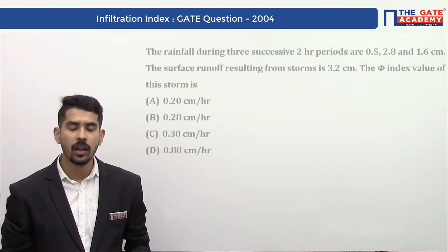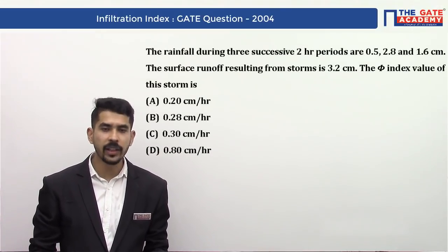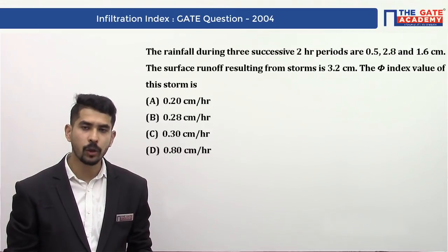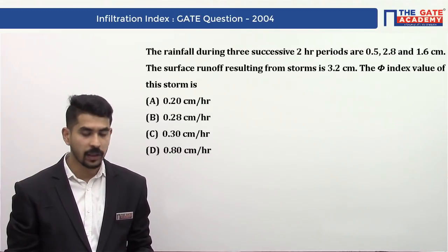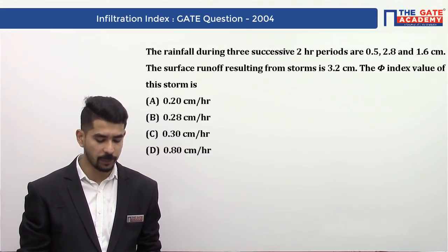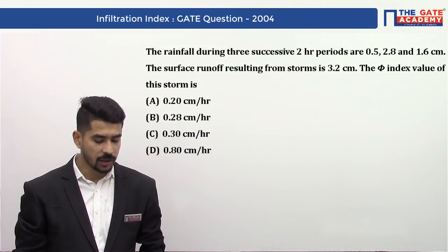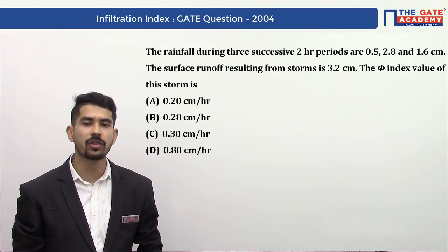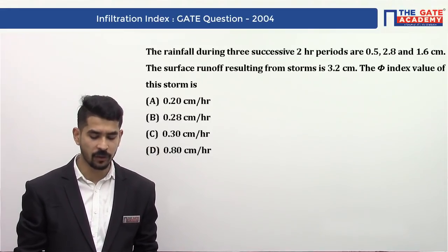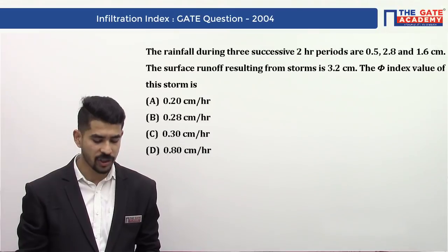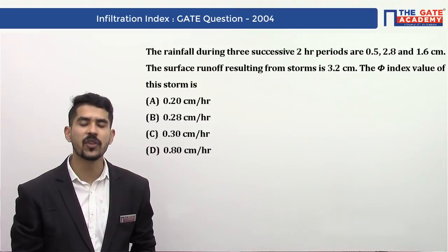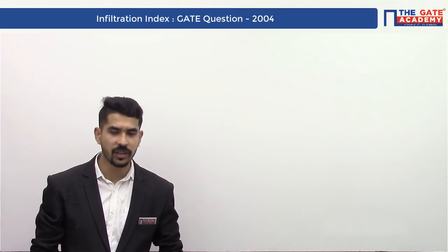This question says the rainfall during three successive two-hour periods are 0.5, 2.8, and 1.6 centimeters. The surface runoff resulting from the storm is 3.2 centimeters. The phi index value of this storm is asked, with options: (a) 0.2 cm/hr, (b) 0.28 cm/hr, (c) 0.30 cm/hr, and (d) 0.8 cm/hr.